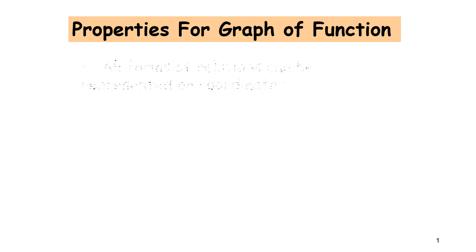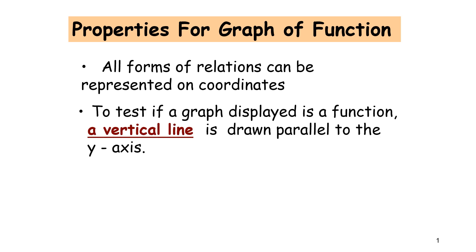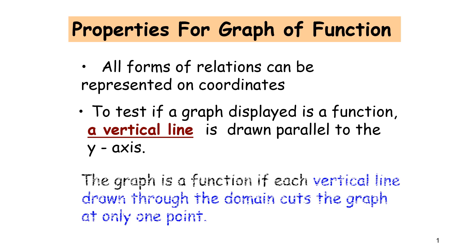Properties for graph of a function: first, all forms of relations can be represented on coordinates. Second, to test if a graph displays a function, a vertical line is drawn parallel to the y-axis. The graph is a function if each vertical line drawn through the domain cuts the graph at only one point.